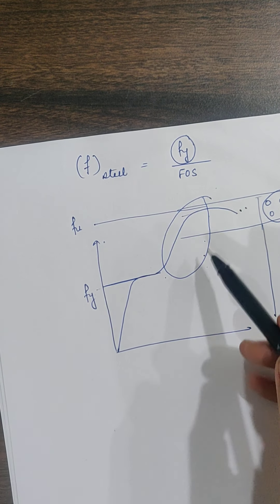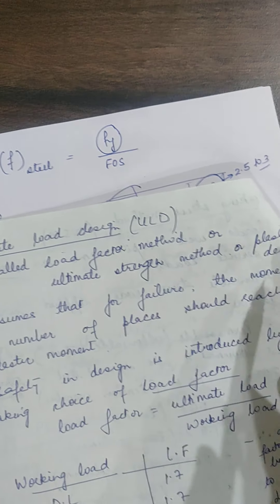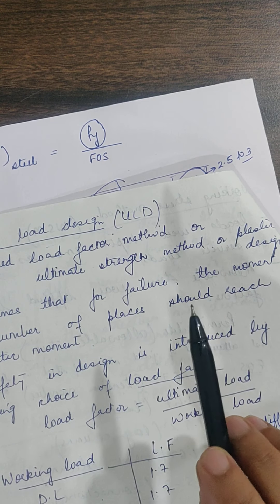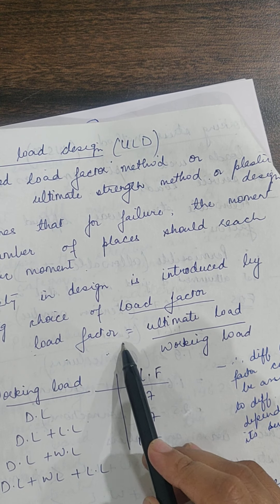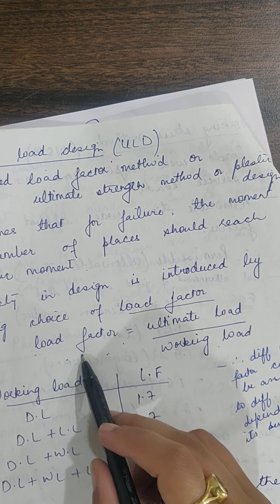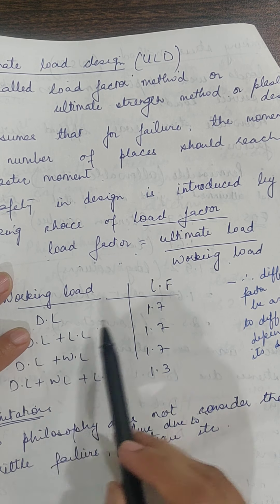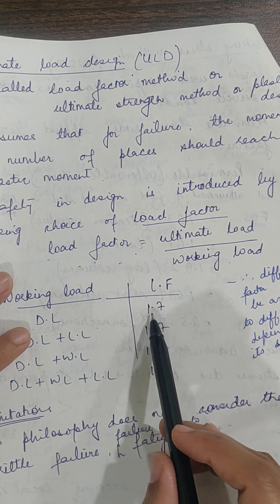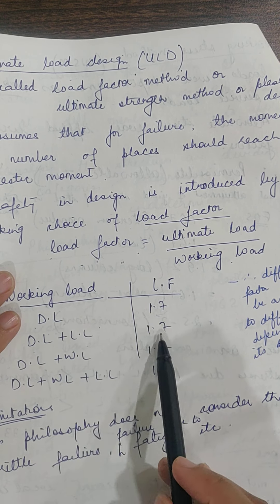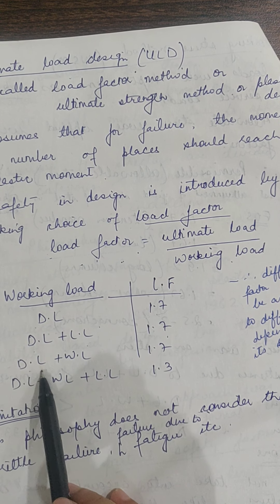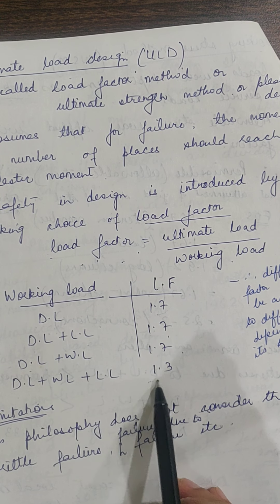To address these drawbacks, another method was proposed: ultimate load design, also called load factor method or plastic design. In this method, the entire factor of safety is shifted to loads — the working load is multiplied by a load factor. Dead load is multiplied by 1.7; a combination of dead load plus live load is also increased by 1.7; dead load plus wind load is increased by 1.7; and dead load plus wind load plus live load is increased by 1.3.